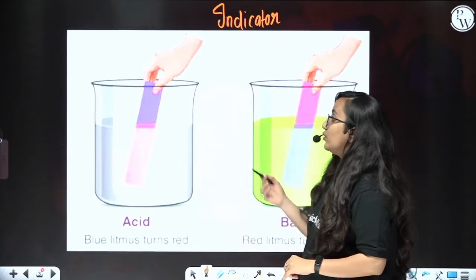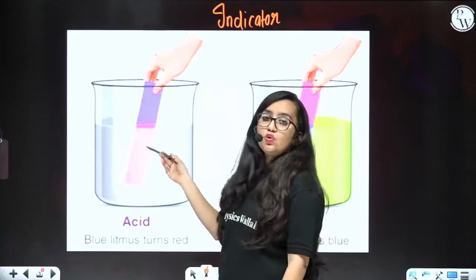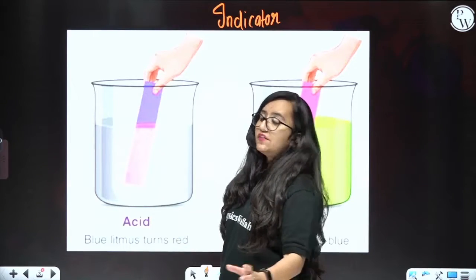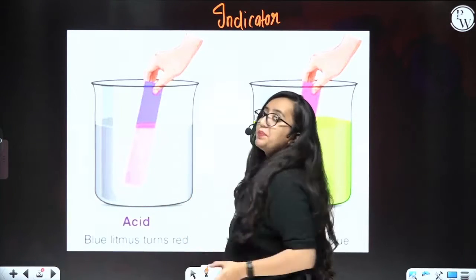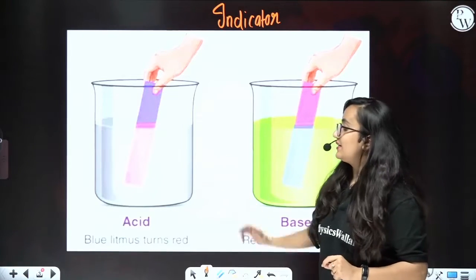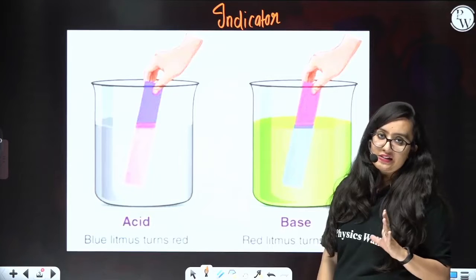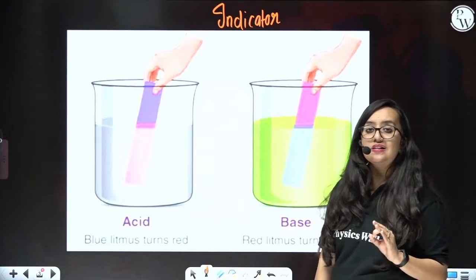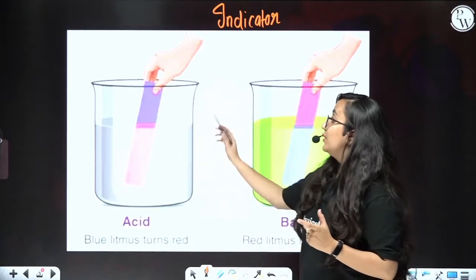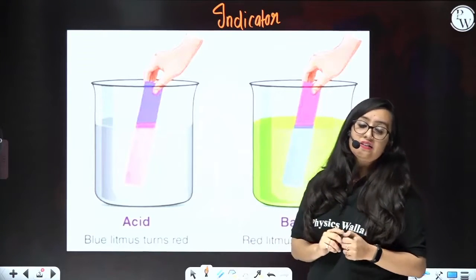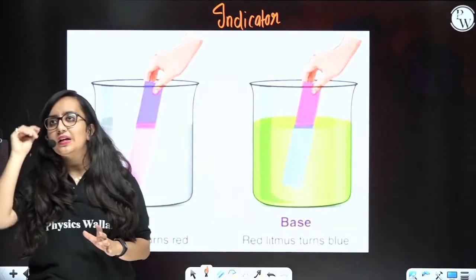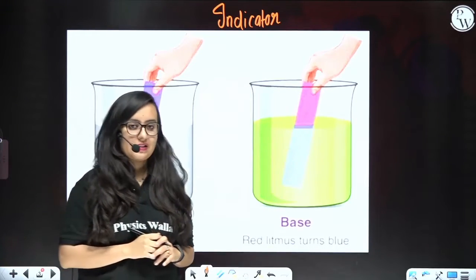If you dip a blue litmus paper into acid, it will turn pink. If that blue litmus paper is turning pink, then it is confirmed that this solution is acid. When blue litmus turns red, then that particular solution is always acid.